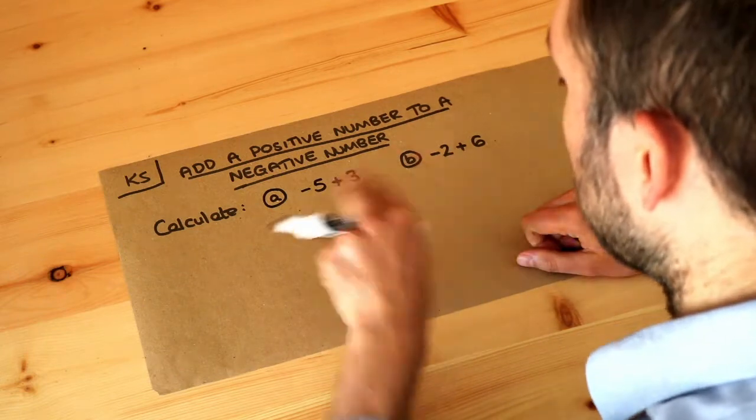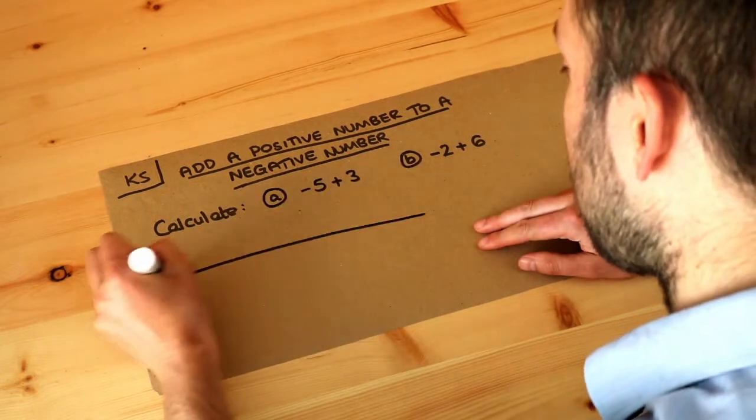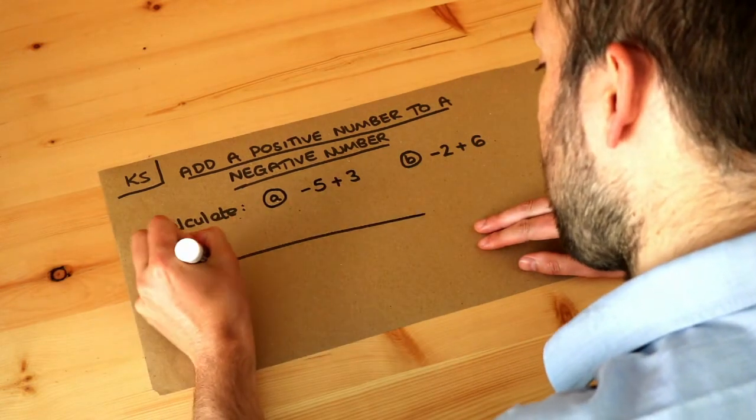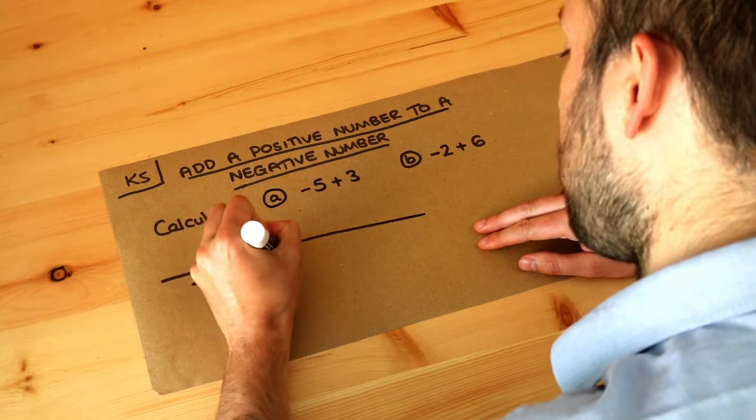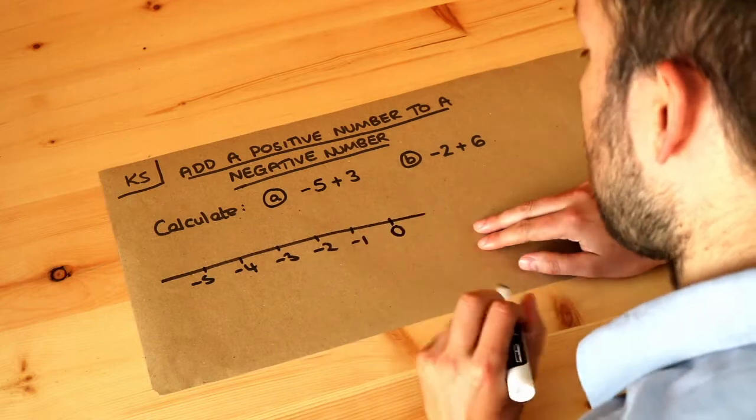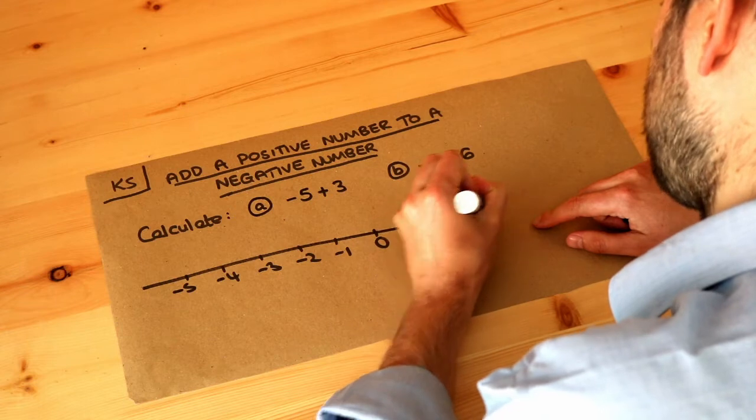Now it might help initially as you're getting used to these kind of questions to draw out a number line. So if I do that, I'm going to go all the way down to minus 5 because that's the smallest number I can see here. So here, minus 4, minus 3, minus 2, minus 1, 0. And then as we increase from 0, it's obviously going to go up 1, 2, 3, 4, etc.